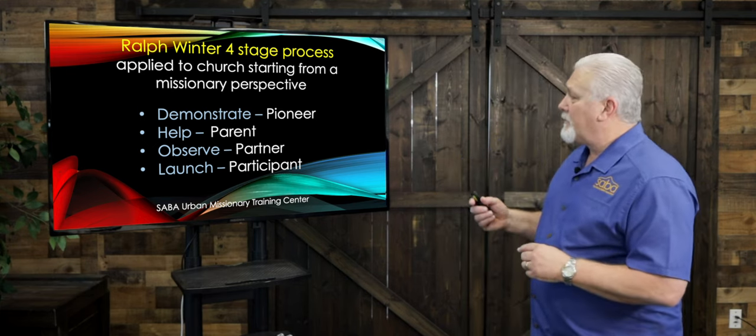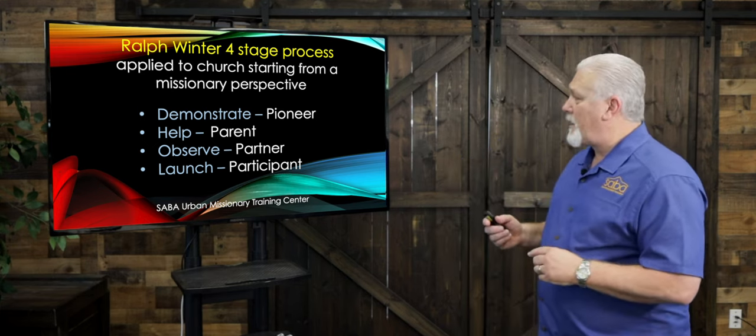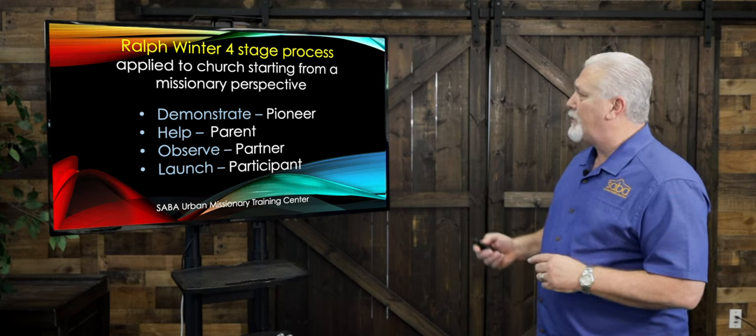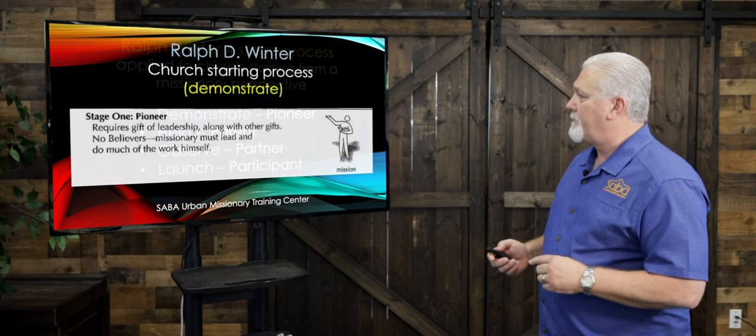Ralph Winter's four-stage process is Pioneer, Parent, Partner, and Participant. We'll look at each of those four stages.